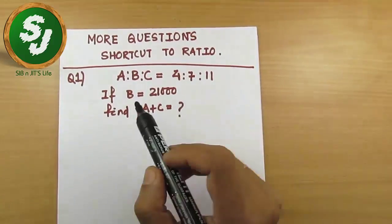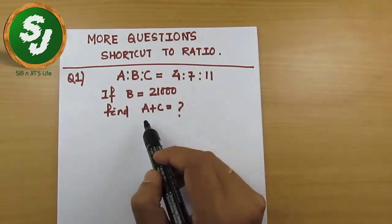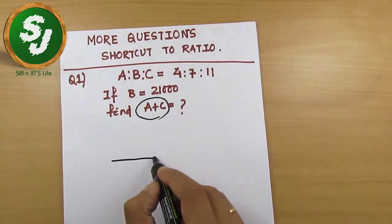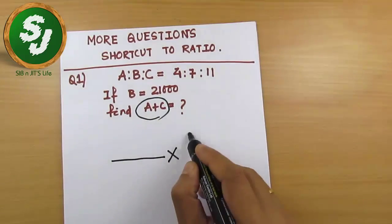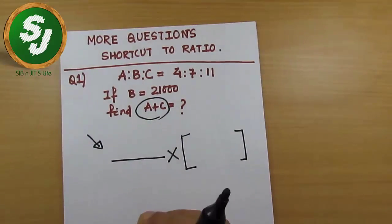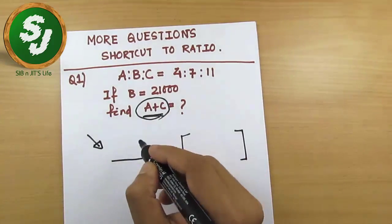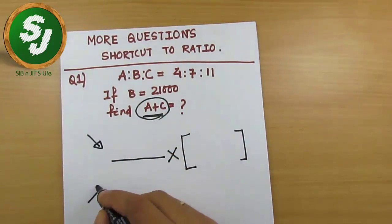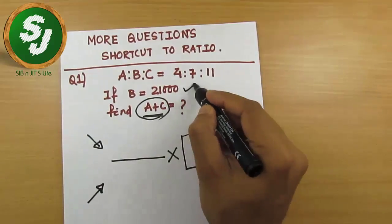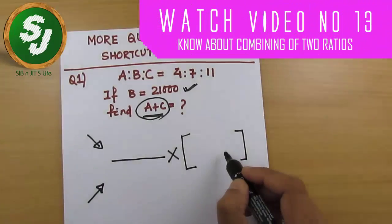Find the value — this is question one: a is to b is to c is 4 is to 7 is to 11. If b is 21,000, find the value of a plus c. Let me remind you the shortcut: you write something over something into a number. On the numerator you write the ratio part of what is asked in the question, and on the denominator you write the ratio part of whatever is given.